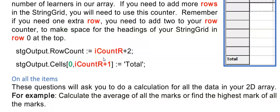If I needed to display another row at the bottom, I would have to take my counter and add two — one for the row at the top and then one extra one to display the totals at the bottom. Then I can display the label 'Total' in ICountR plus 1, which would be that cell.